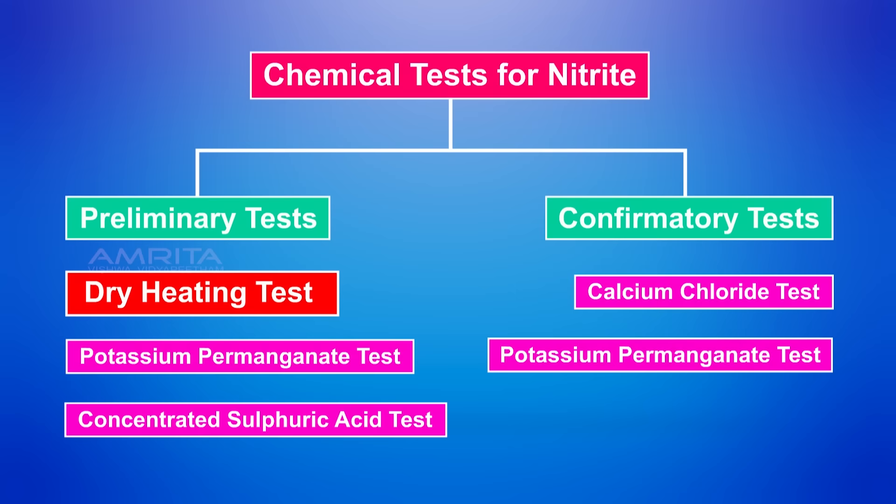Let's first look at the preliminary tests of oxalate. They are: dry heating test, potassium permanganate test, and concentrated sulphuric acid test. Dry heating test.